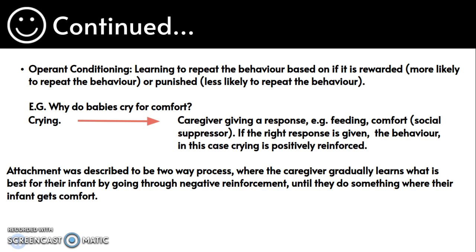Operant conditioning is learning to repeat behavior based on what is rewarded, which makes you more likely to repeat the behavior, or punished, which makes you less likely to repeat the behavior. For example, why do babies cry for comfort? Crying results in the caregiver giving a response — for example, feeding or comforting the infant — and comfort acts as a positive reinforcer. If the right response is given, the behavior, in this case crying, is positively reinforced. Attachment is described as a two-way process, where the caregiver gradually learns what is best for their infant by going through negative reinforcement until they do something that gives their infant comfort.